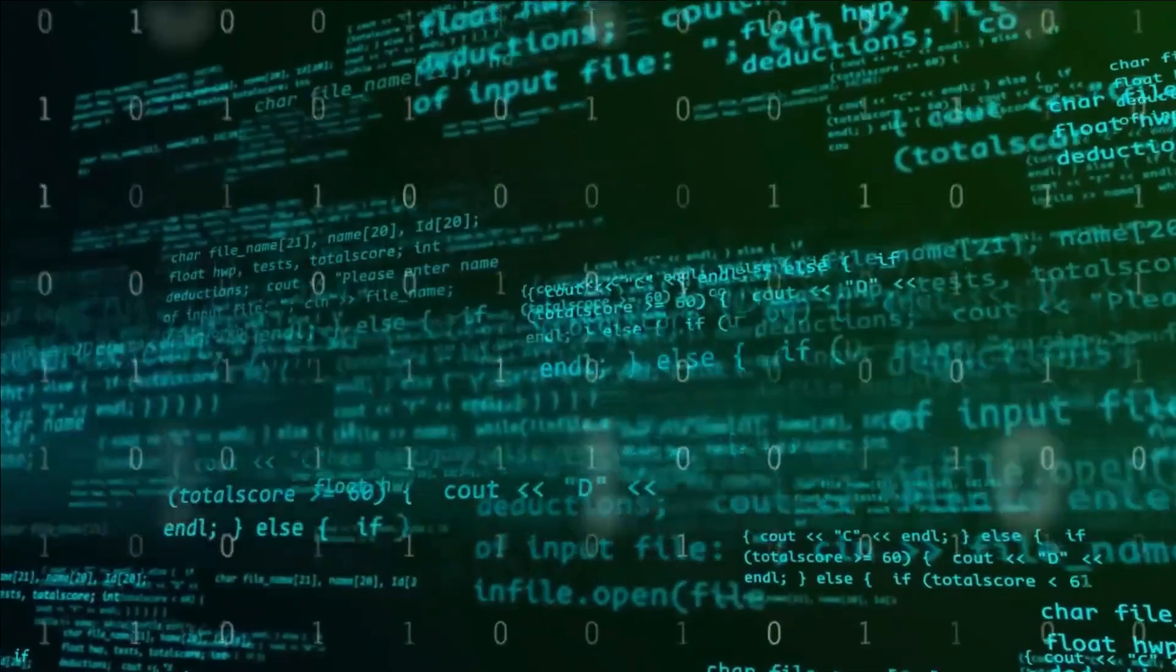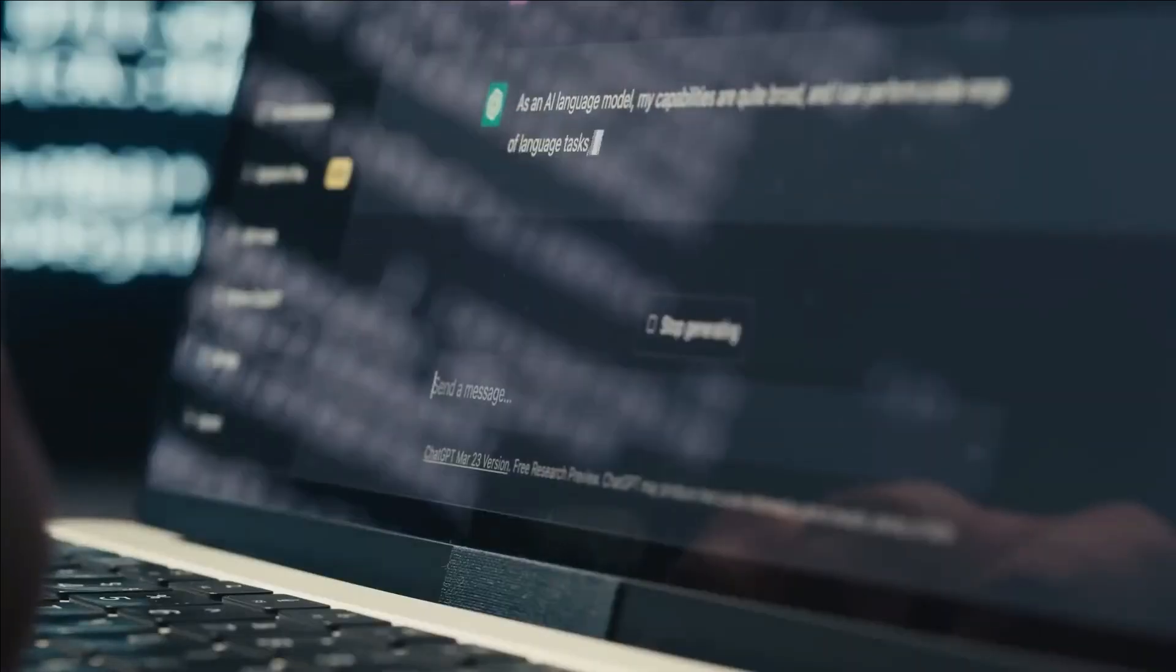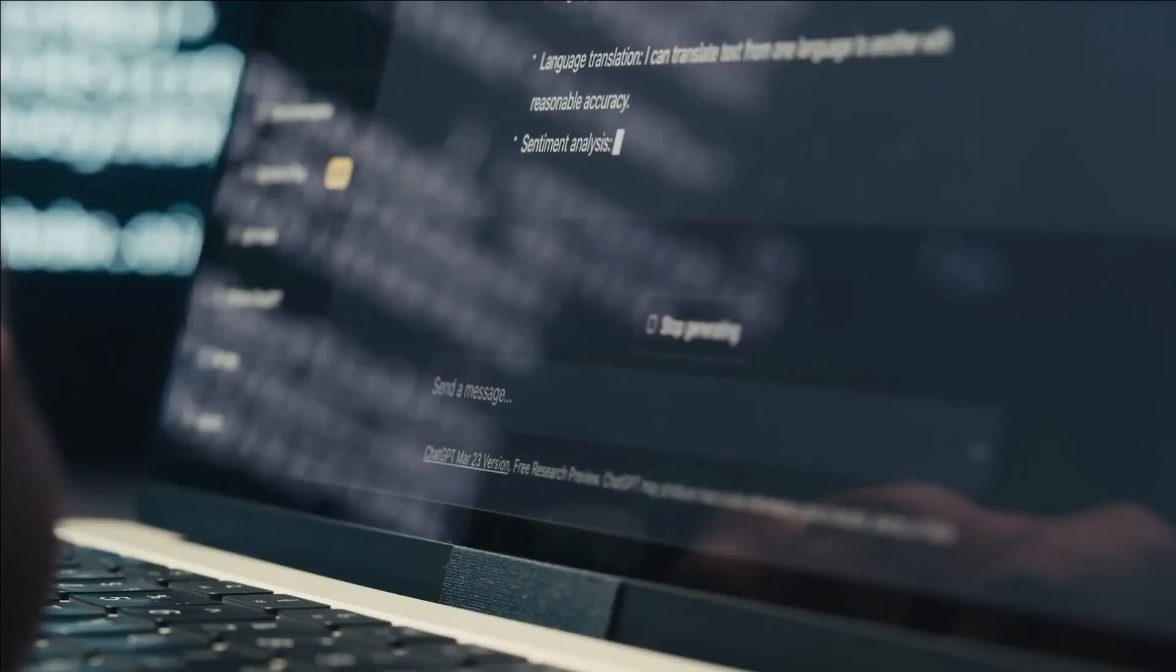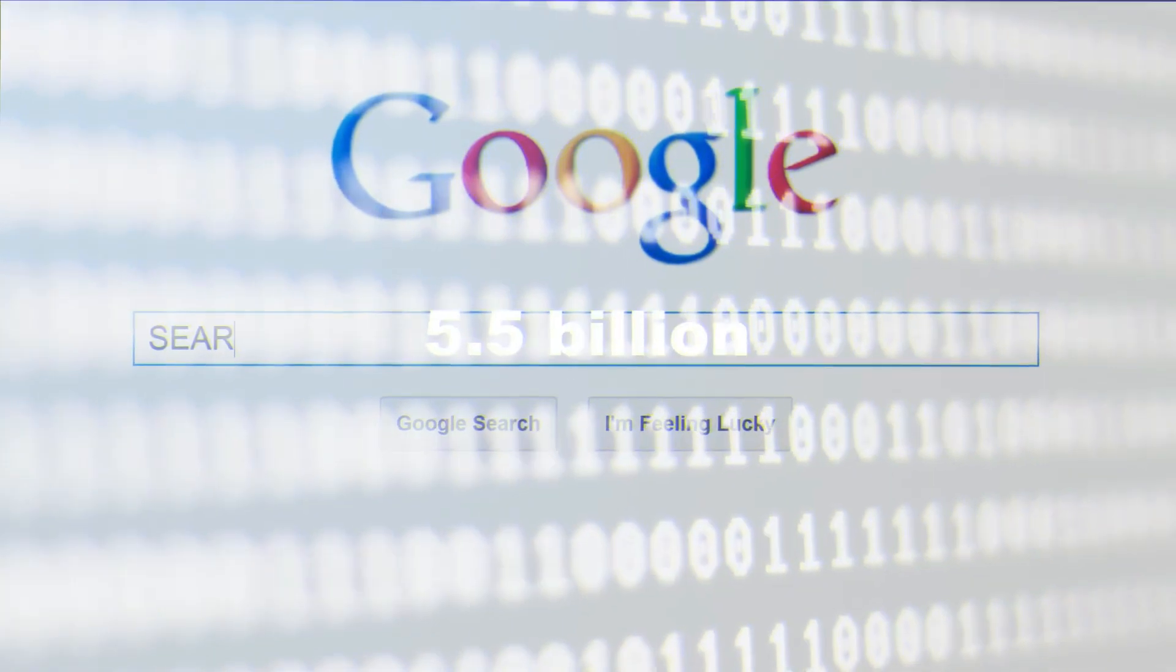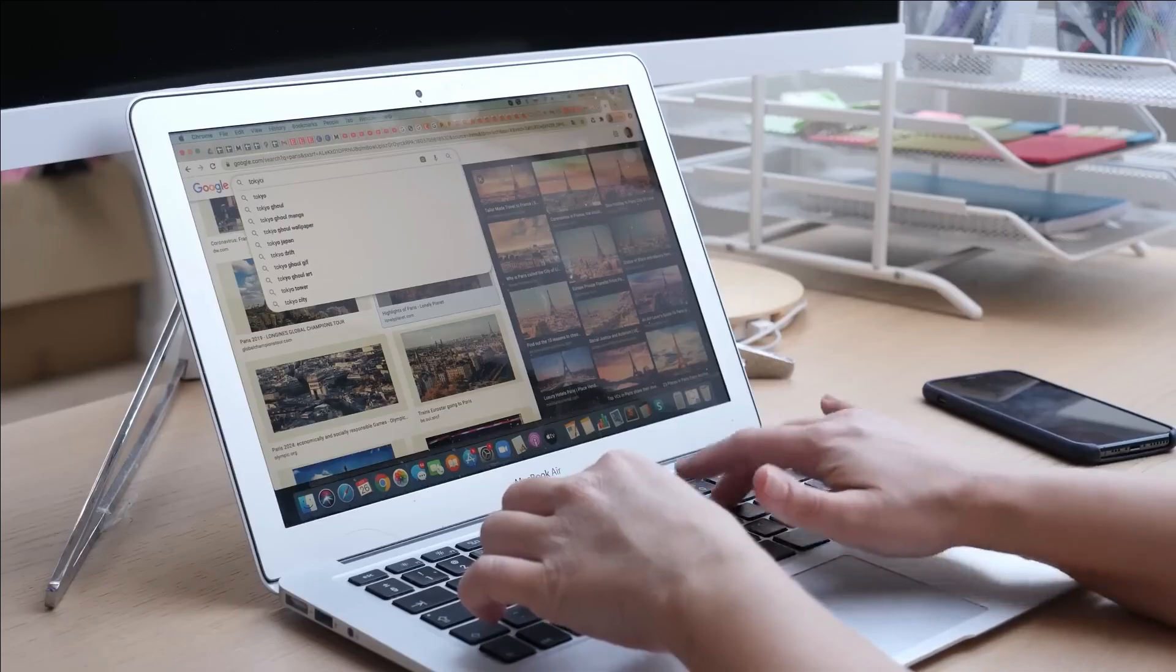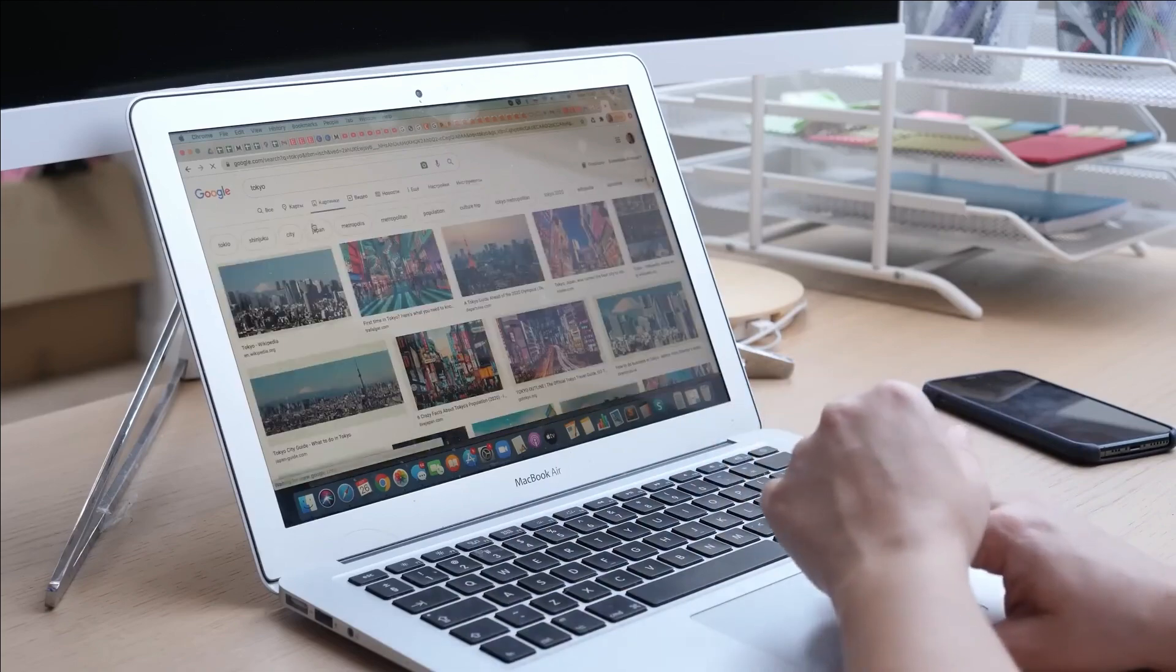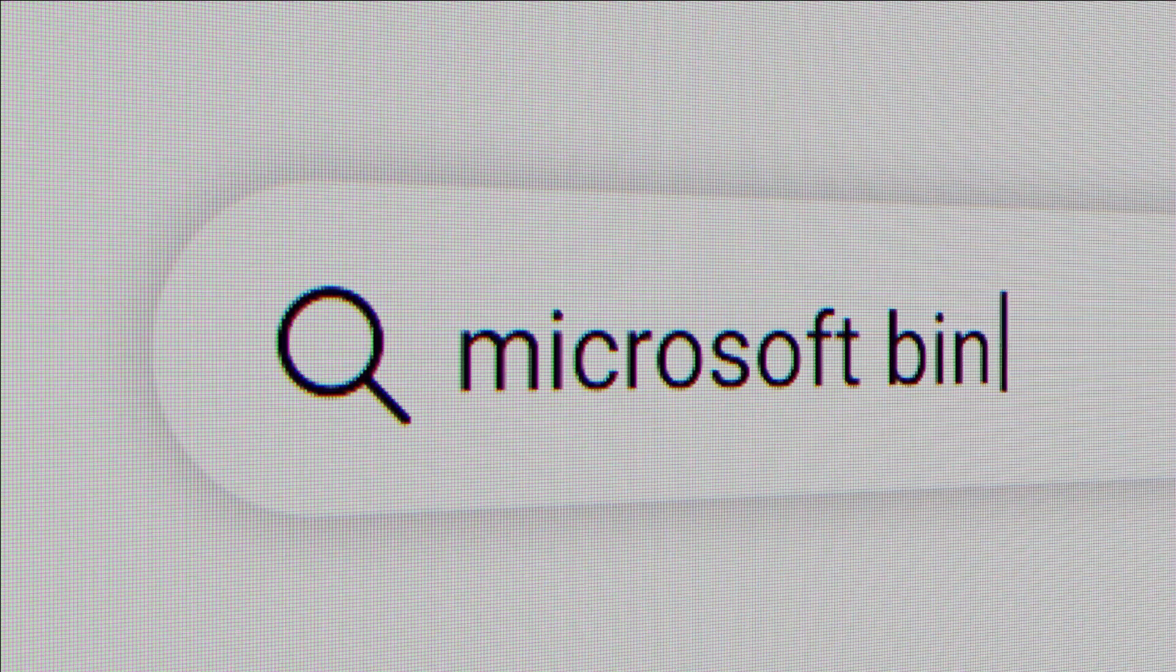In a mere minute, an astonishing 3.8 million searches take place on Google. That adds up to a staggering 5.5 billion searches daily. And guess what? Giants in the AI realm like Google, Facebook, Amazon, Microsoft, and others are leading this data gold rush. They amass, retain, and scrutinize vast quantities of personal data.